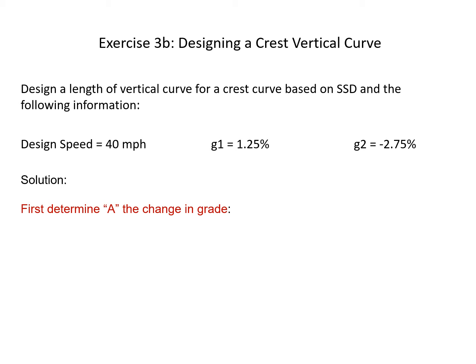First, determine A, which is the change in grade. Looking at the equation, A equals G2 minus G1, or the absolute value of G2 minus G1. Plugging in the numbers, we get a value of A equals 4%.